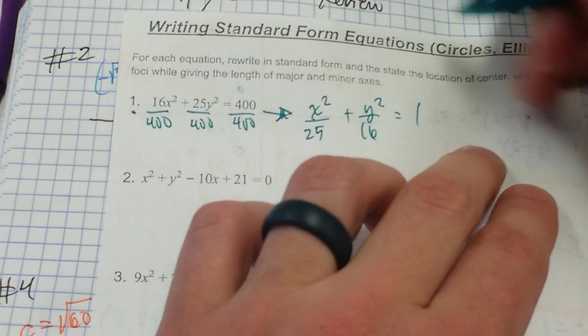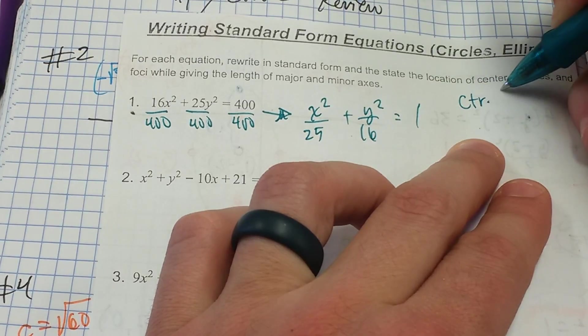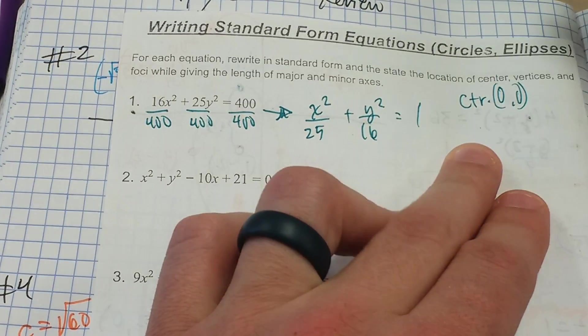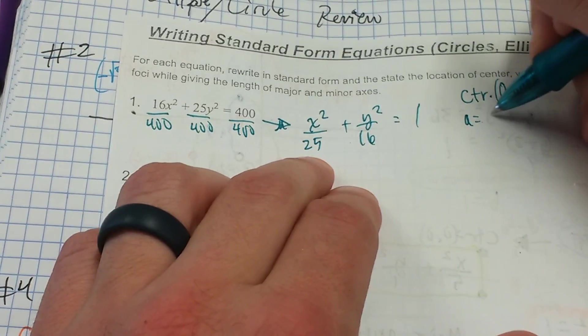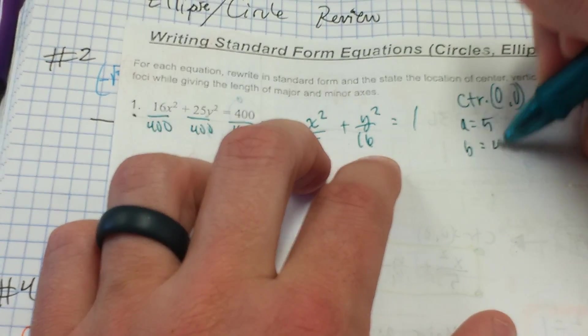What we need to be able to get is the center, which is at the origin. The major radius going with the x is 5. The minor radius going with the y is 4.